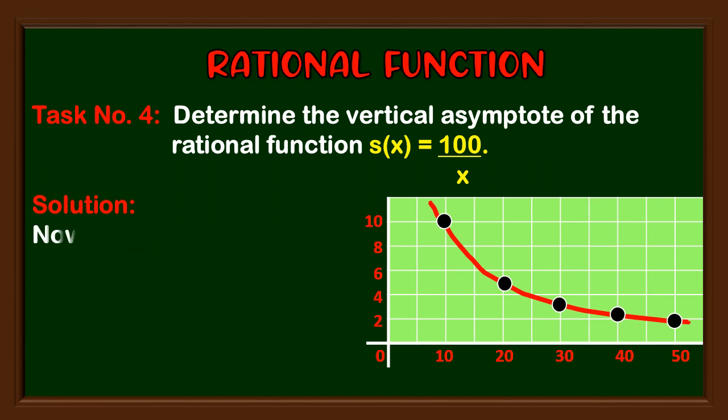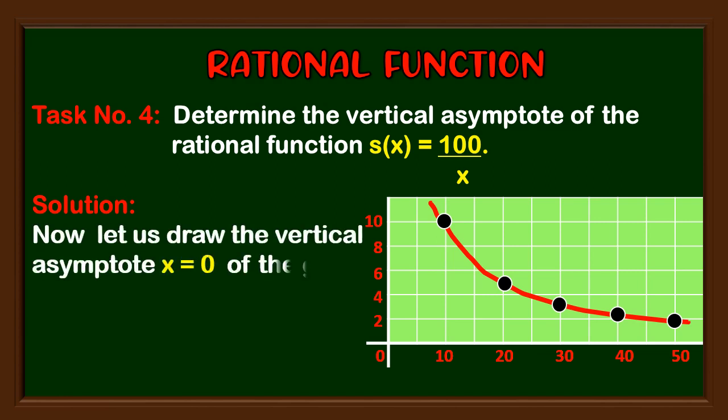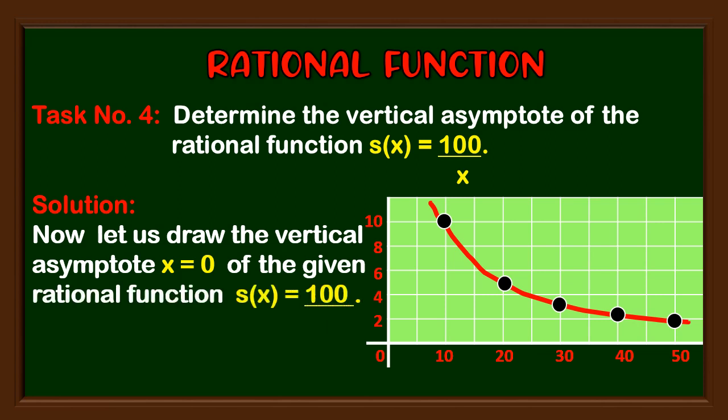Now let us draw the vertical asymptote x = 0 of the given rational function s(x) = 100 / x.